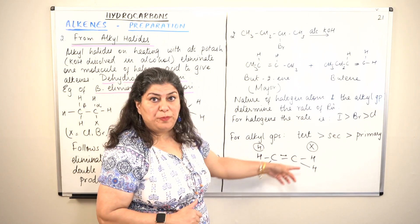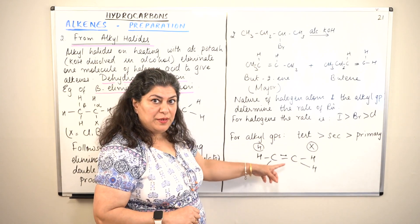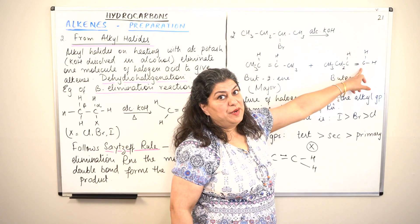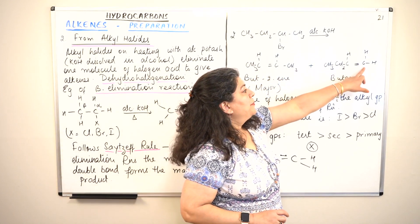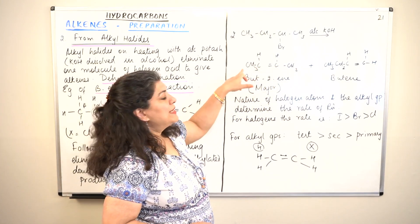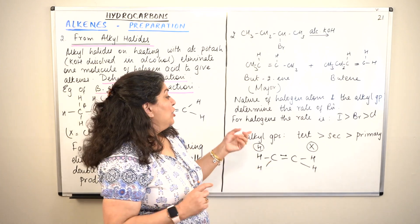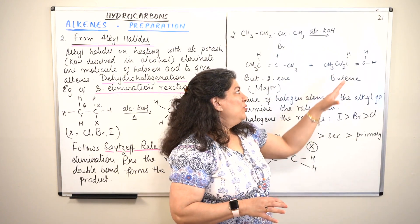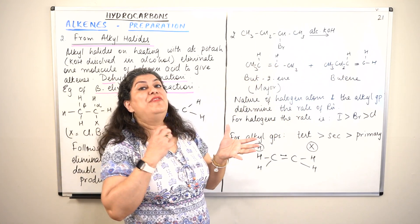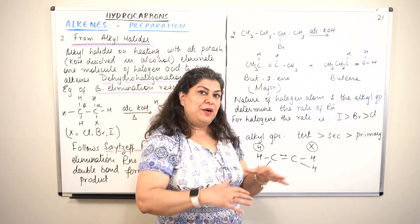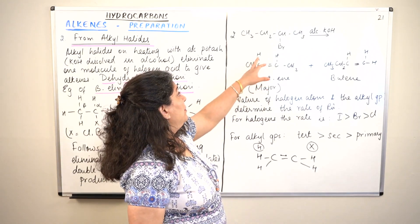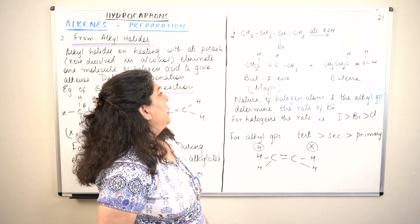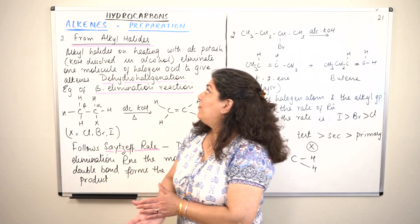Looking at the alkyl groups attached to the alpha carbon: the rate of elimination follows tertiary > secondary > primary alkyl halides. In the 2-bromobutane example, the primary beta carbon gave the minor product while the secondary beta carbon was favored. The more substituted the carbon, the faster the elimination, so a tertiary alkyl halide would react fastest.